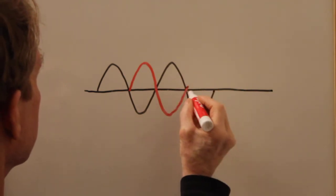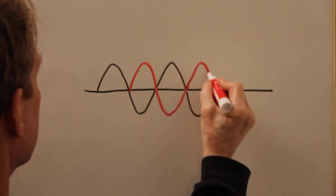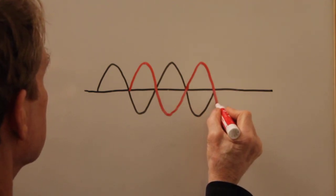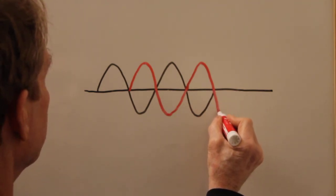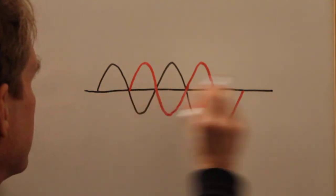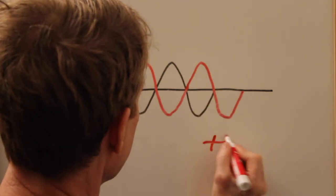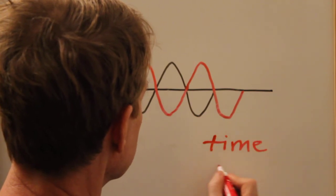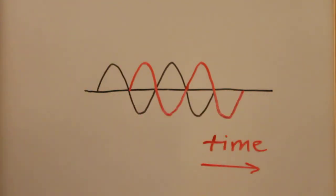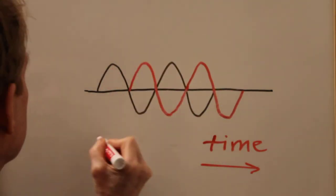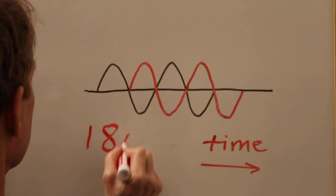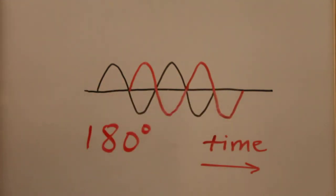In this case I am shifting the wave later in time, time going like this, so it's a lagging phase of one half of a cycle, which is 180 degrees of phase.